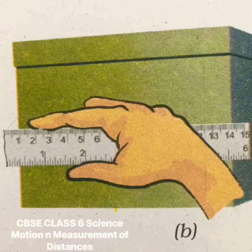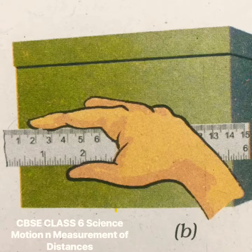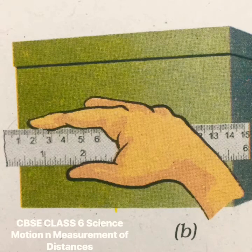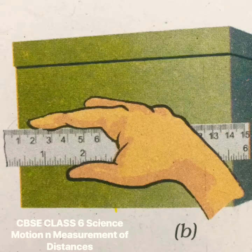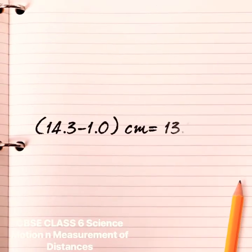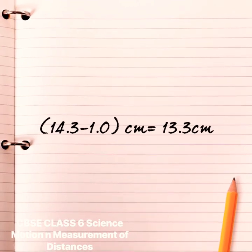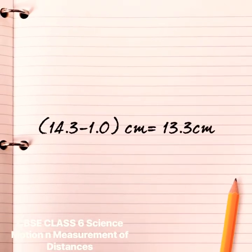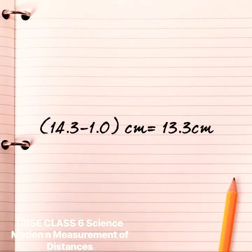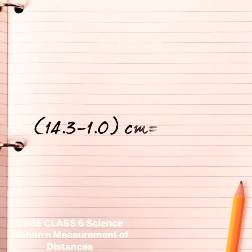Then you must subtract the reading of this mark from the reading at the other end. For example, the reading at one end is 1.0 centimeter and at the other end it is 14.3 centimeter. Therefore the length of the object is 14.3 minus 1.0 centimeter, which equals 13.3 centimeter.